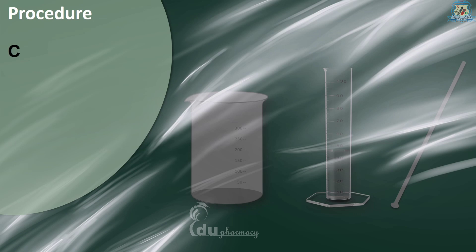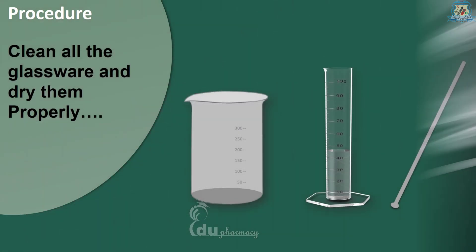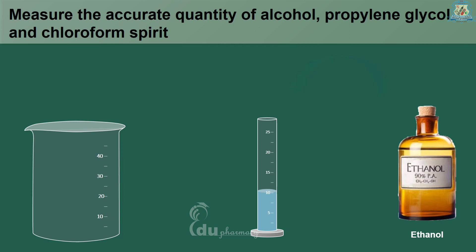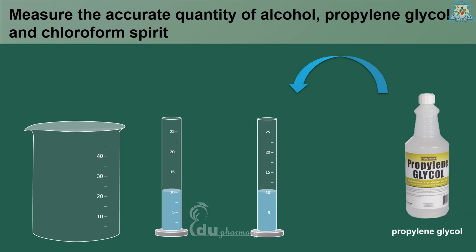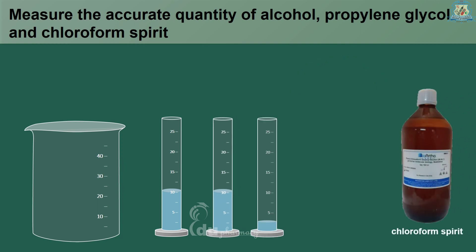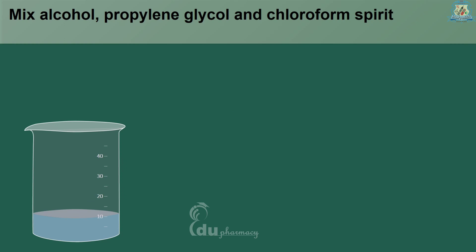Let's see the procedure. The first step is to clean all the glassware and dry them properly. Now, measure the accurate quantity of alcohol, propylene glycol and chloroform spirit, and mix these three co-solvents in a beaker.